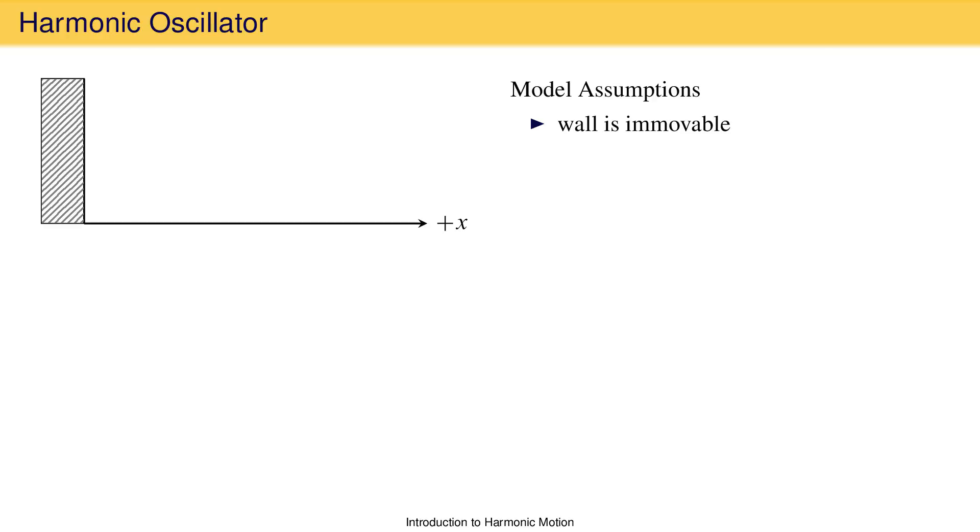We make assumptions that allow us to draw conclusions without too much math. We can improve the model later if we want. On the floor we place an object, and it will have a mass m. We will assume there is no friction between the mass and the floor, allowing the mass to move freely in the x-direction if a force is applied.